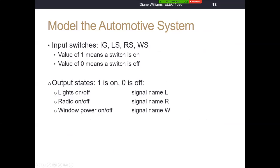We'll define our input switches: a value of one will mean a switch is on, and zero will mean off. So one means we're going to activate it, zero means the state will be off. For the output states, a one means it's turned on and a zero is off. So the lights are on when they're a one and off when they're a zero. The radio is on when it's a one and off when it's a zero. Window power is on at one and off at zero. We'll call these outputs L, R, and W for lights, radio, and window.